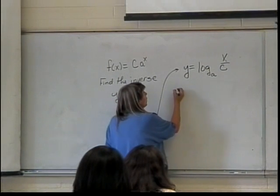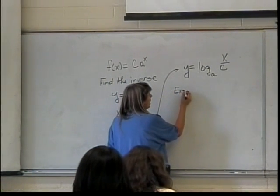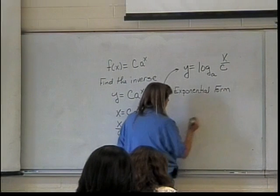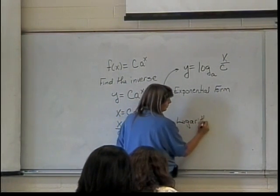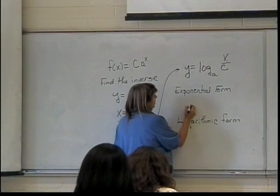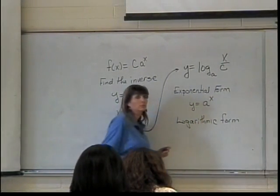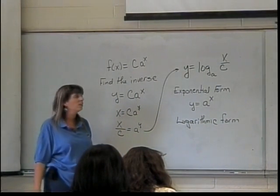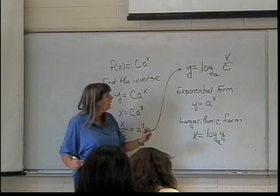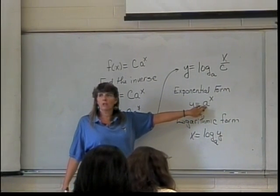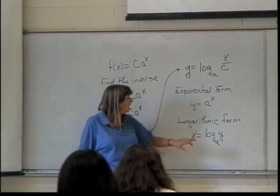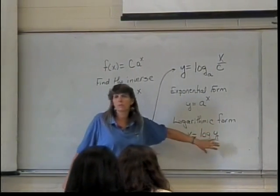In general, you have two forms for writing things when we have exponentials and logarithms. We have exponential form, and we have an equivalent logarithmic form. The basic exponential form is y equals a to the x. The same thing written in logarithmic form is x equals log base a of y. Remember, this was the base of our exponential function — it's also referred to as the base of our logarithm. The logarithms produce the exponents.